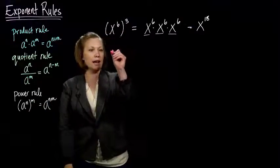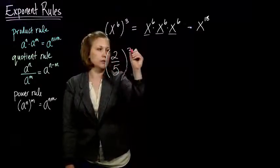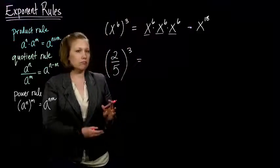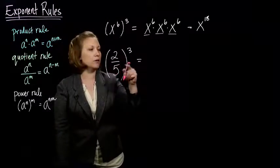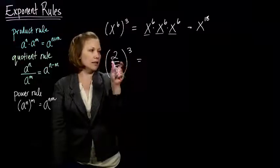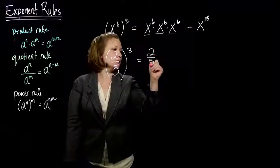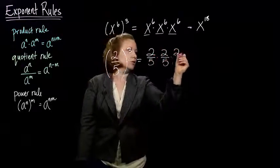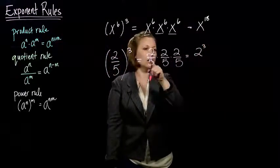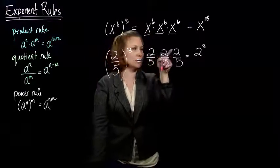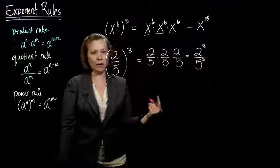What about if I had a fraction raised to a power? It's a similar idea — we can use what it means to be an exponent to figure it out. This tells me to take this fraction and multiply it by itself three times. So I have 2 fifths times 2 fifths times 2 fifths. Remember how to multiply fractions — straight across: 2 times 2 times 2 is 2 to the third, and 5 times 5 times 5 is 5 to the third.